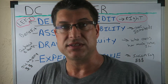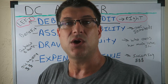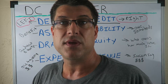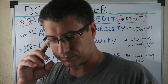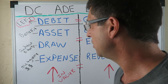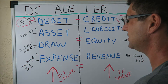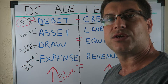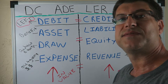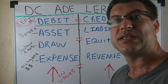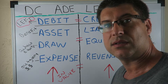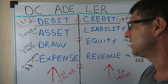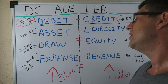In normal balance, if an asset is going up, what do we do with it? We learned DC ADE LER and the normal values — all the values going up, that's where we put things.